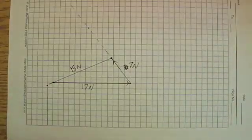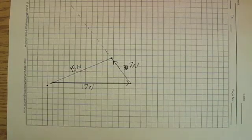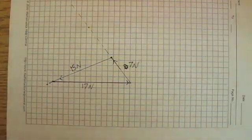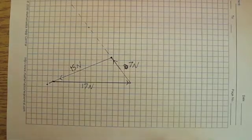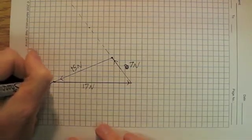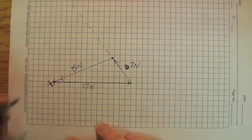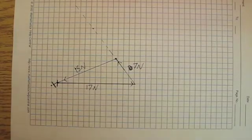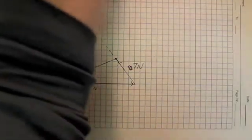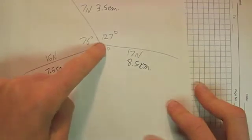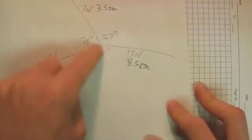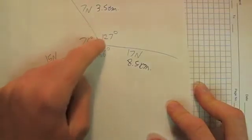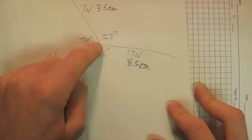So right now I have added those vectors tip to tail. And what you see is that I ended up, this is where I ended up. And this is where I started. And you'll notice that they're very, very close to each other, which is exactly what I wanted to have happen. The reason why they're very, very close to each other is because the center point of this diagram, the center of my spring scales, was not moving. It was not accelerating. So the total force on that object, the total force on the little knot in the center was zero.